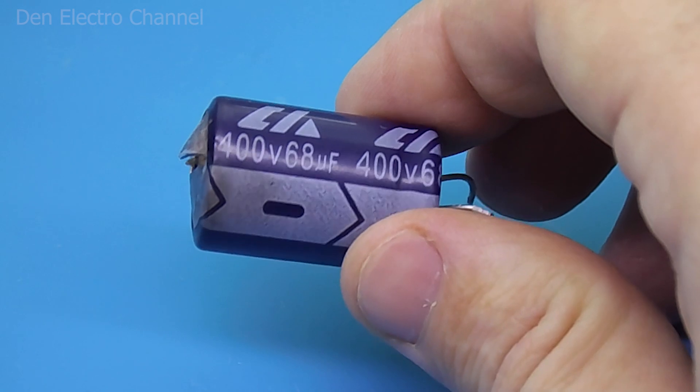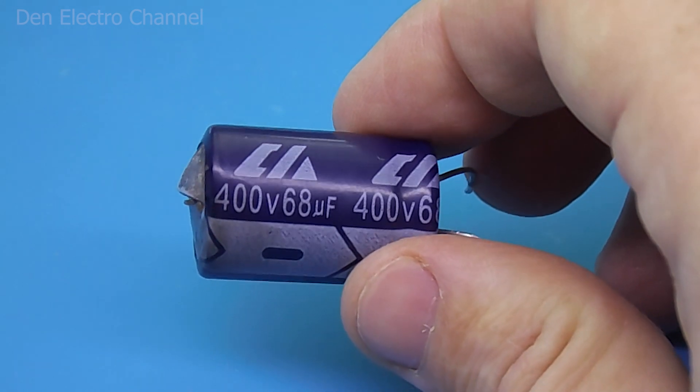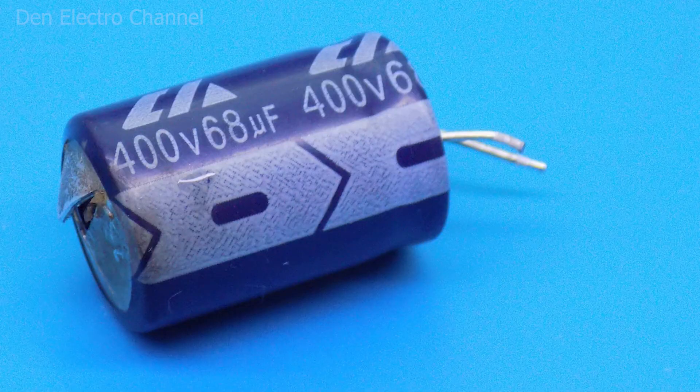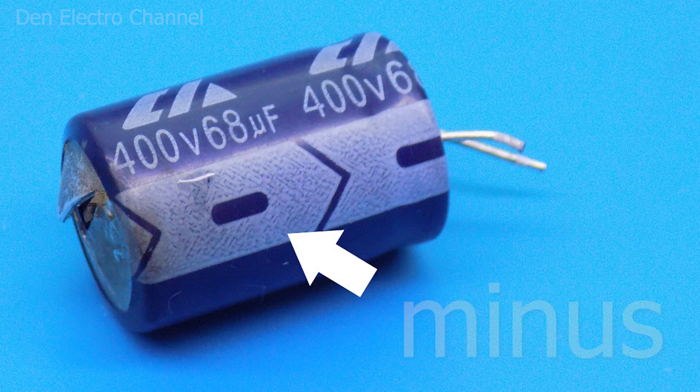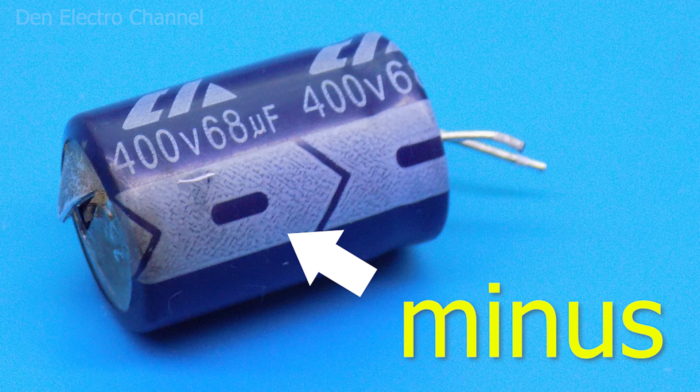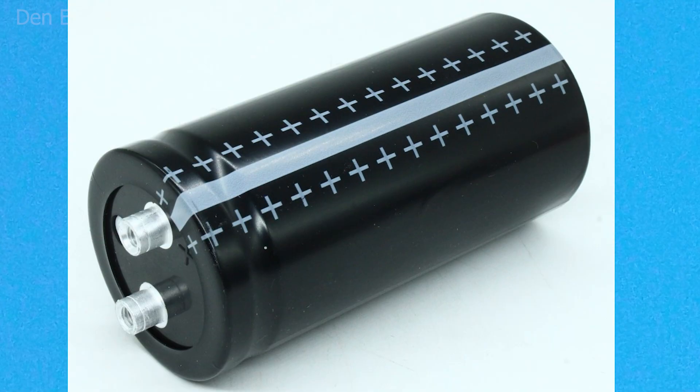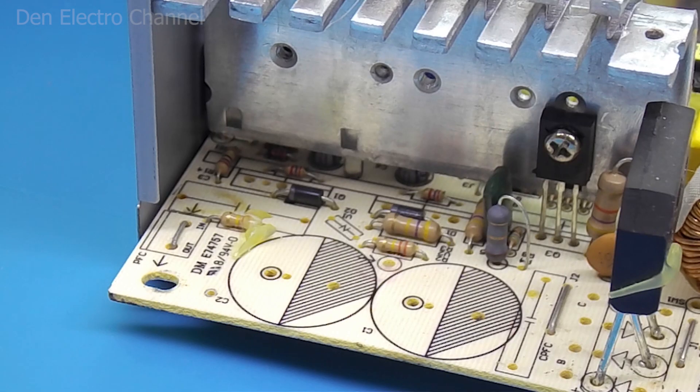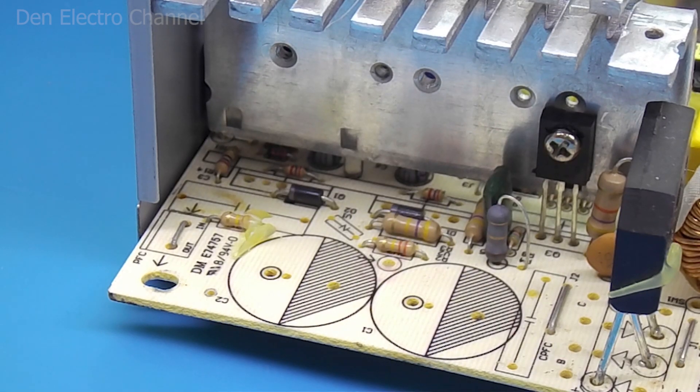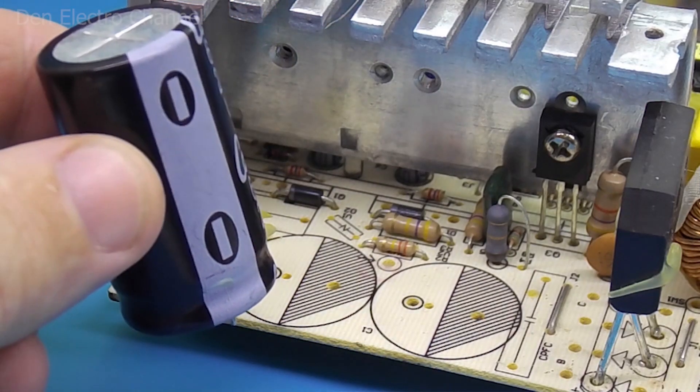Now let's talk about polarity. The capacitor has two poles: plus and minus. The minus is usually displayed on the case either as a white stripe or as small lines. Plus is very rarely marked on capacitors. The new capacitor is connected with exactly the same polarity as the old one. Otherwise, an explosion may occur.